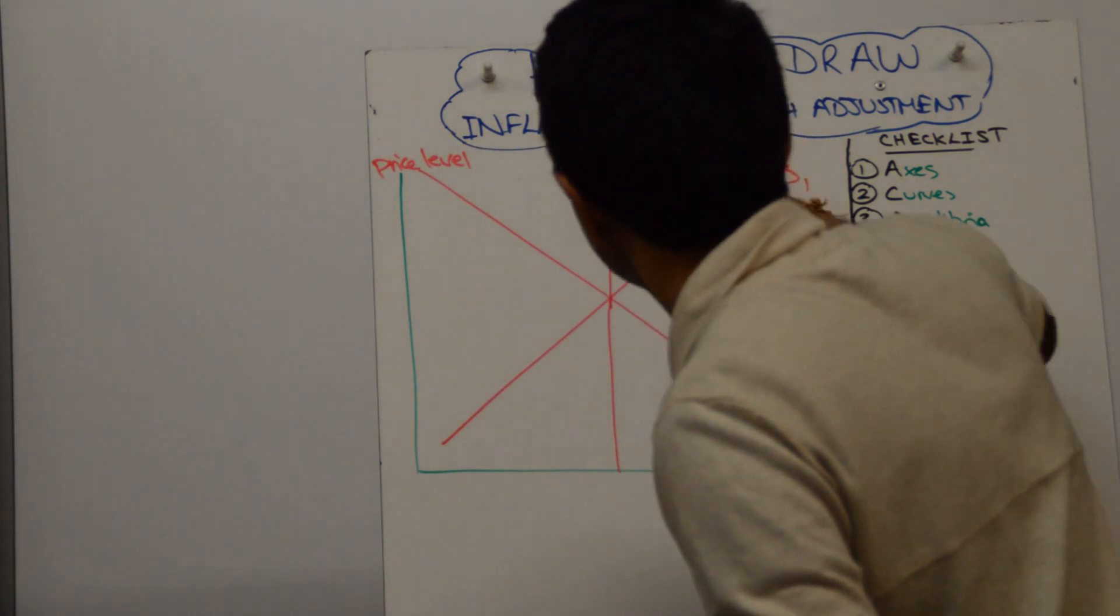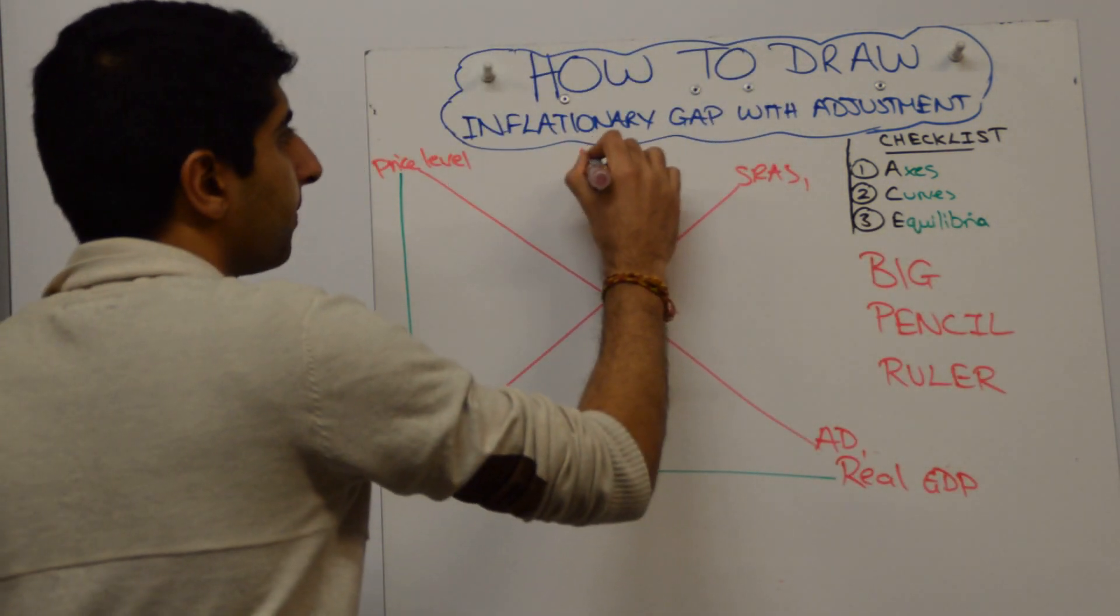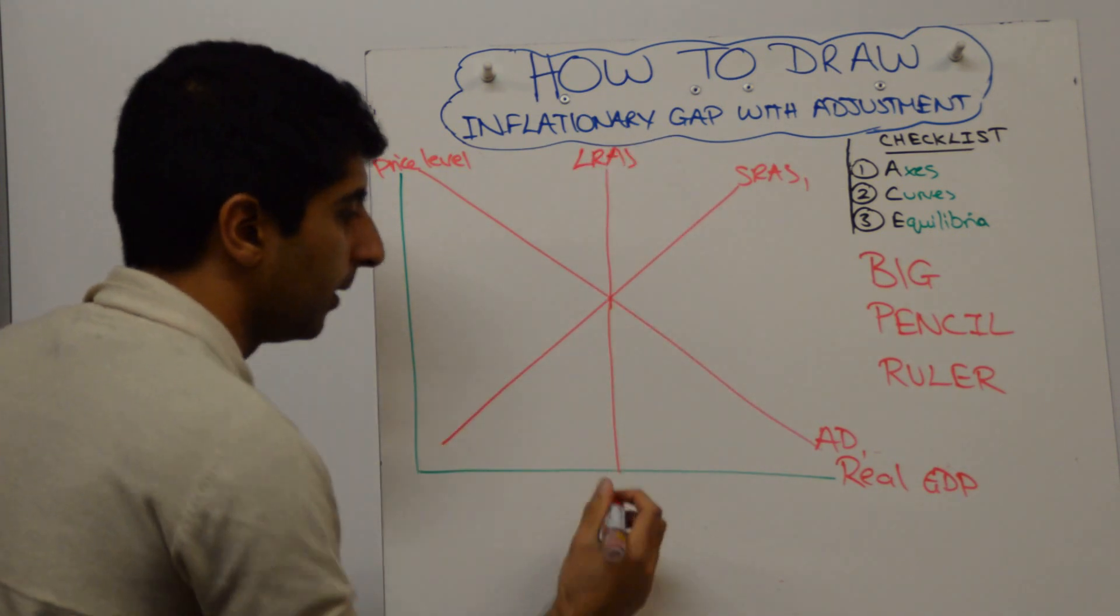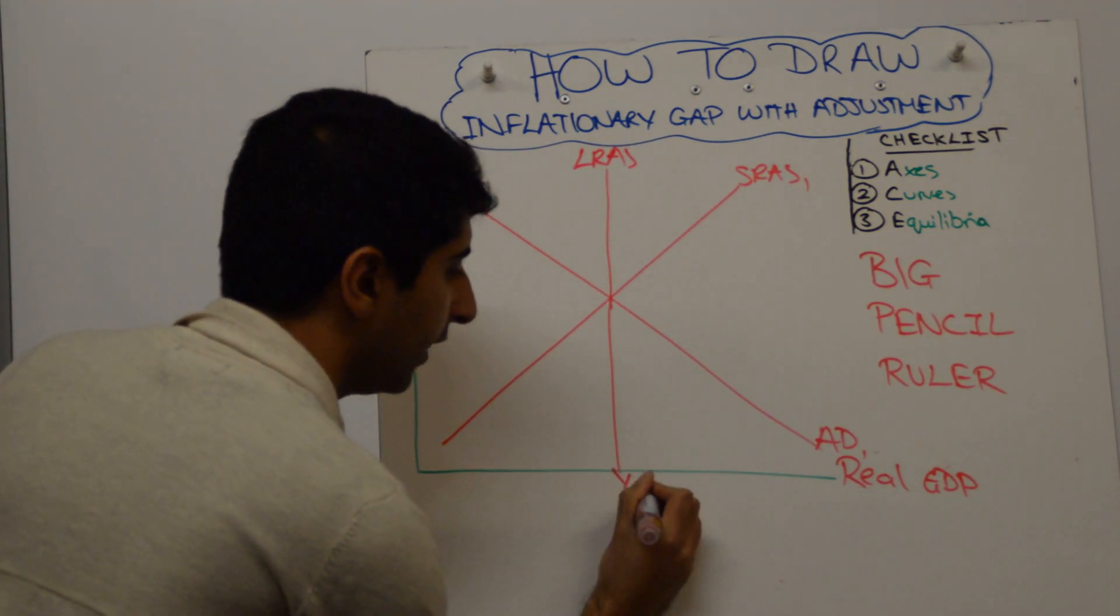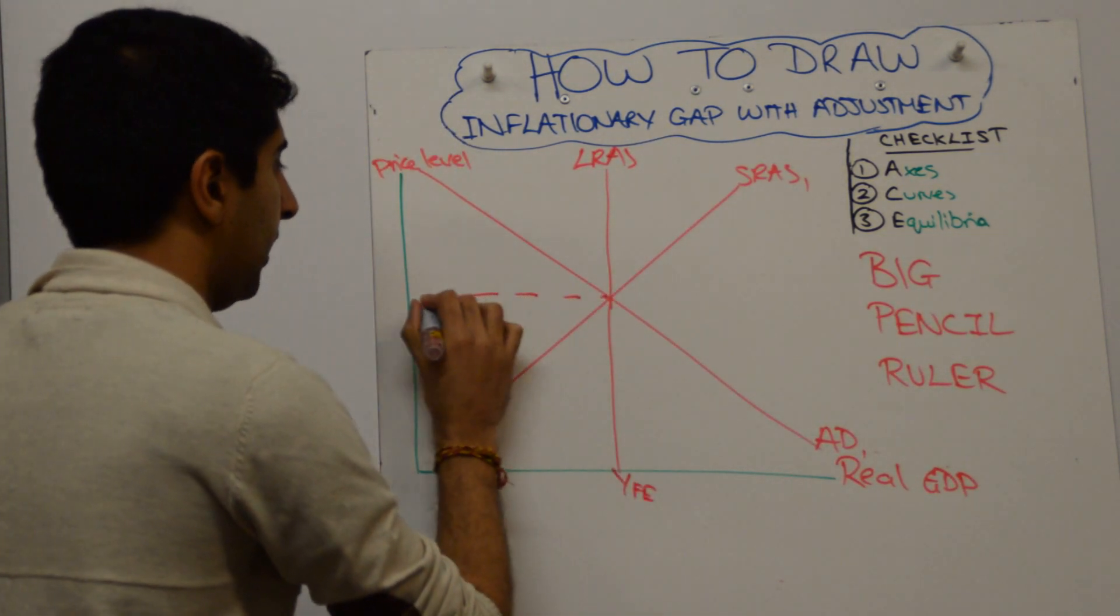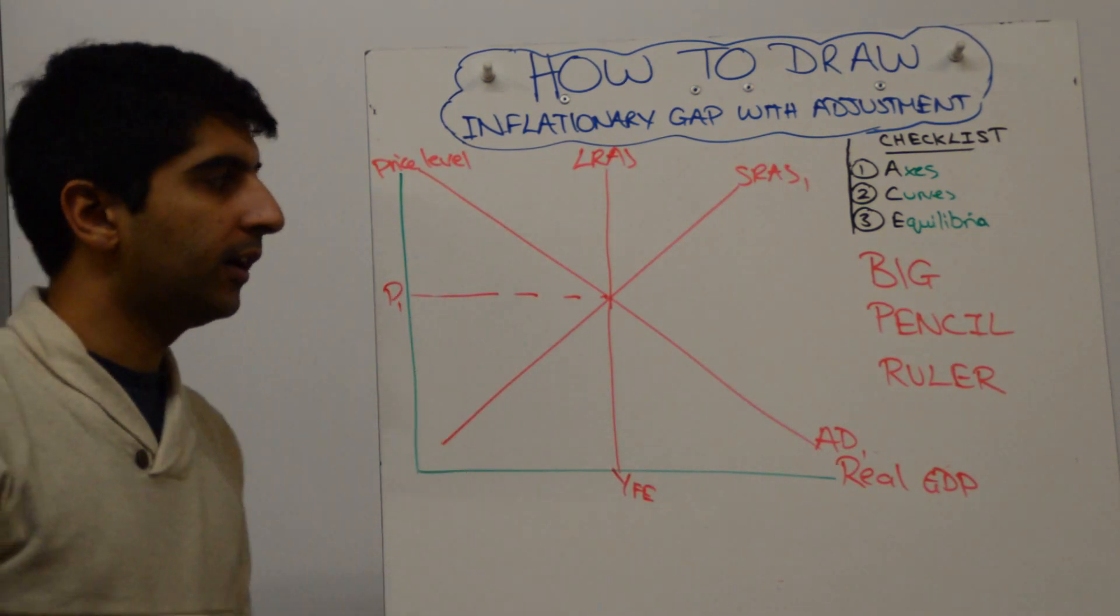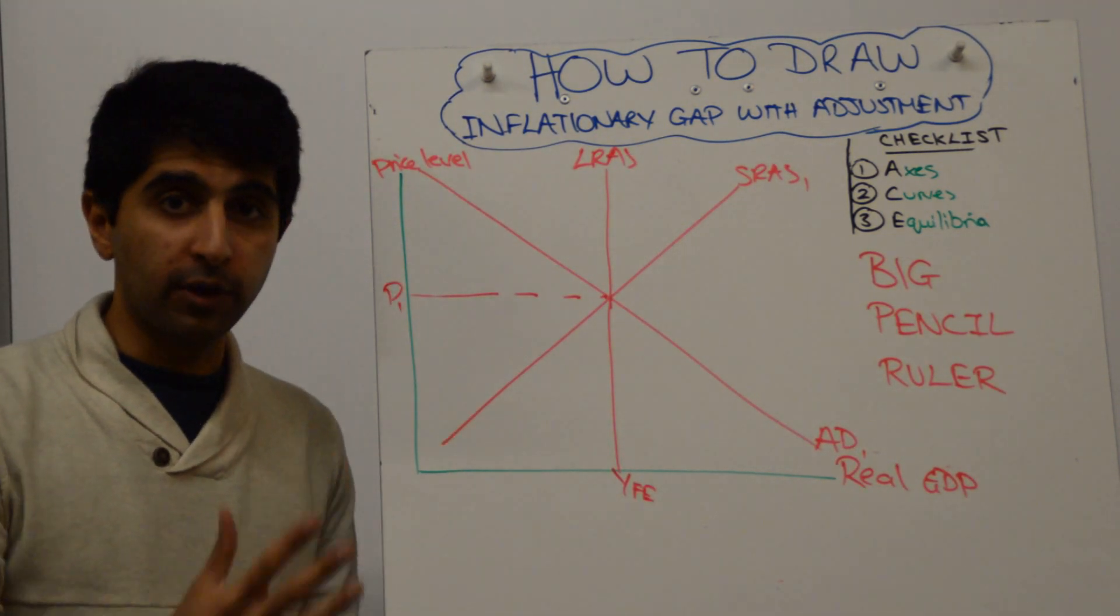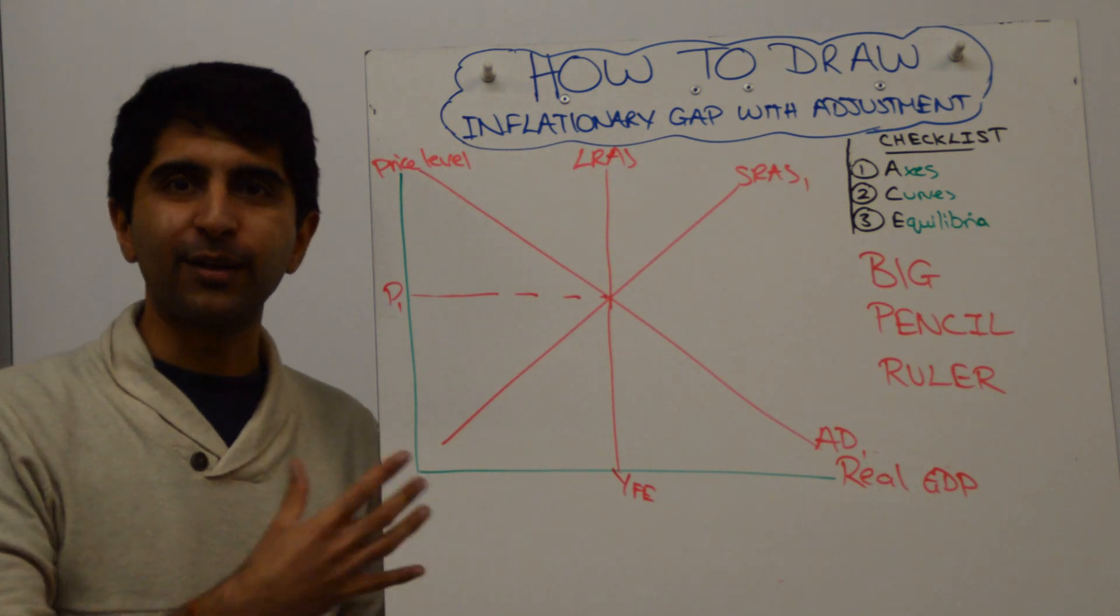So, draw your LRAS going through that equilibrium and label the equilibrium, so YF, E, and P1. Okay, so you start with full employment here as we're used to doing. I made a previous video on how to construct that.